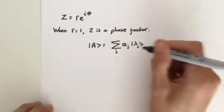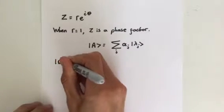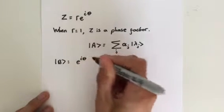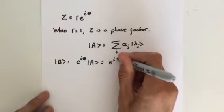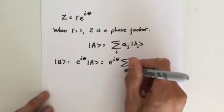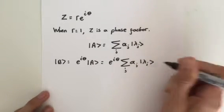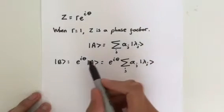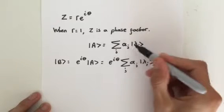We can say multiply this by e to the i theta, and we get that b is equal to e to the i theta times a, which is going to equal e to the i theta times the sum over j of alpha j lambda j. Note that we change the index in the summation from i to j, so you won't get confused from i being the imaginary term and j being the components of the vector.